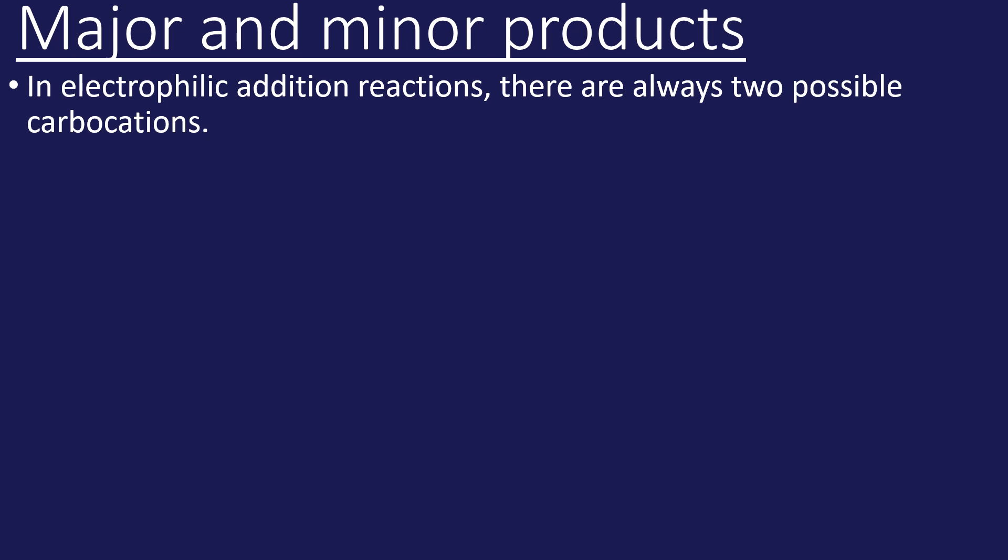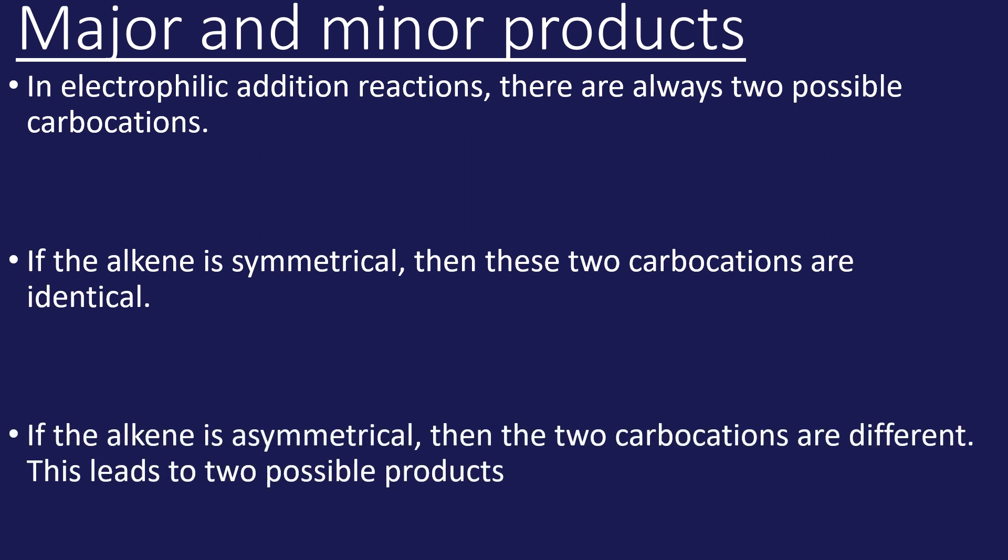There's always two possible carbocations in an alkene during the reaction, either the carbon on the left or the carbon on the right. If the alkene is symmetrical, both carbocations are identical. However, if the alkene is asymmetrical they are not identical groups, the carbocations are different, and it will lead to two possible products.